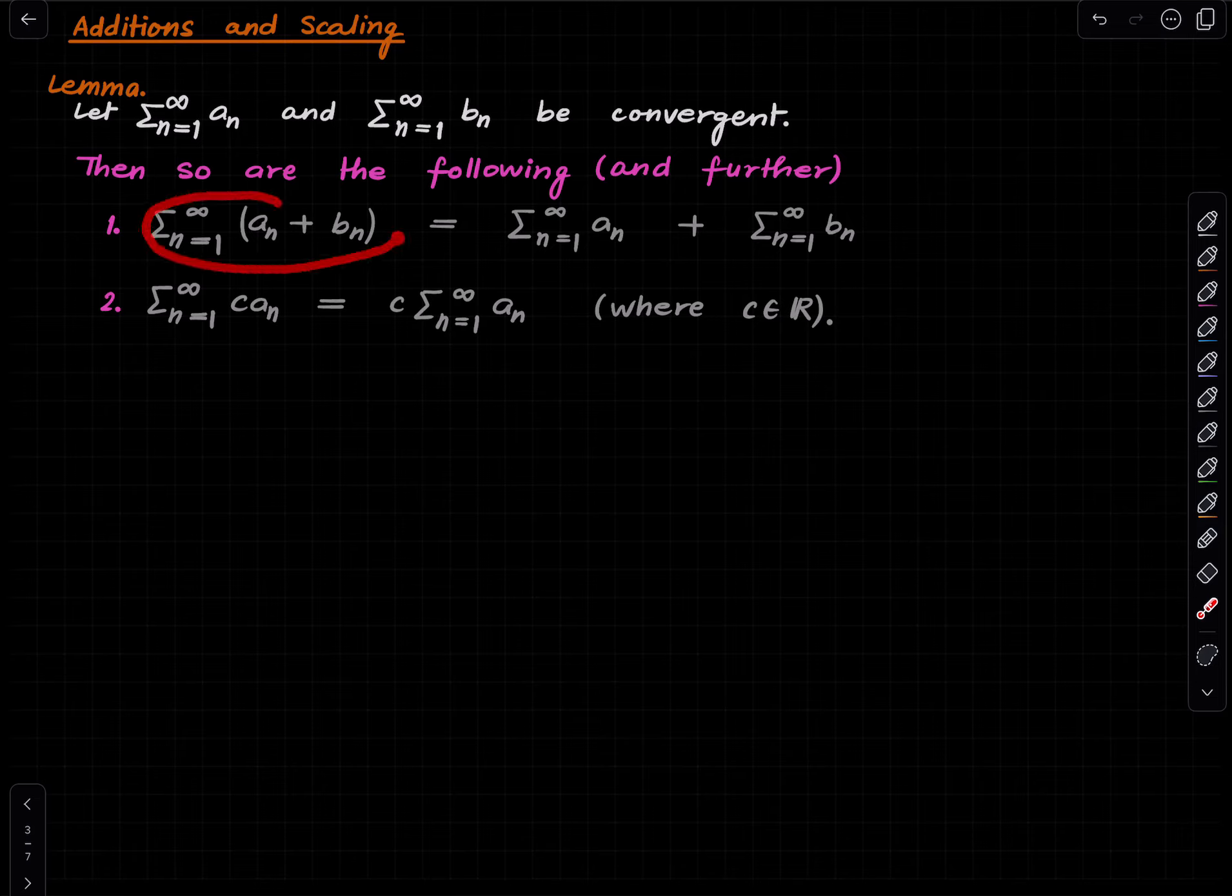Then the summed series—a series whose nth term is the sum of the nth terms of the original series—is also convergent. Further, the limit of the series is the same as the addition of the individual limits, as expected.